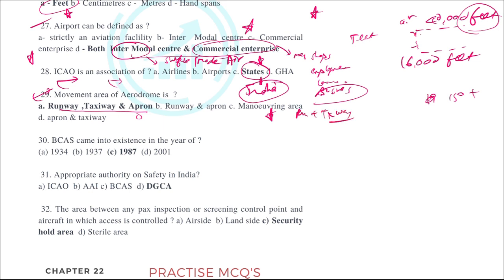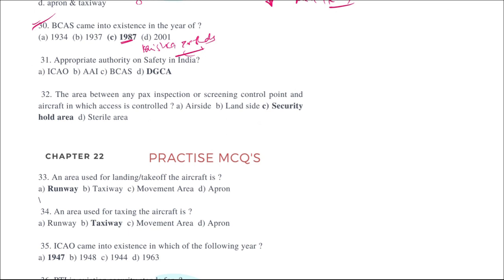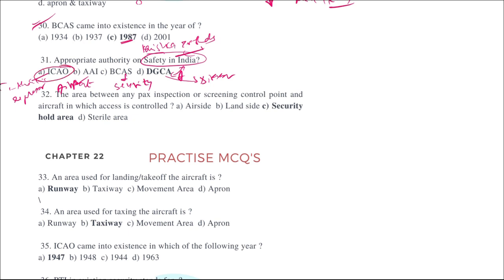BCAS came into existence in 1987, after the Kanishka tragedy. The appropriate authority on safety in India is DGCA — the Directorate General of Civil Aviation. BCAS is for security, AI is the airport operator, and ICAO is the international regulator. In India, the safety authority is DGCA.